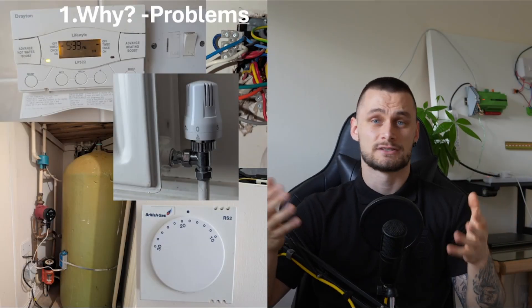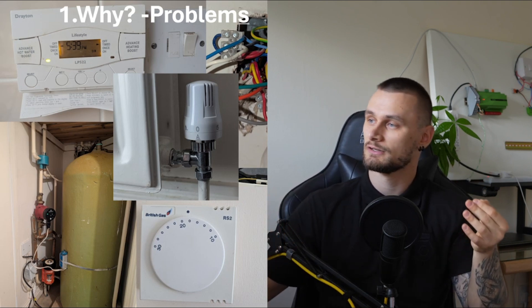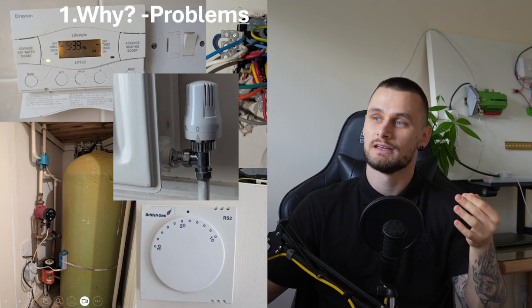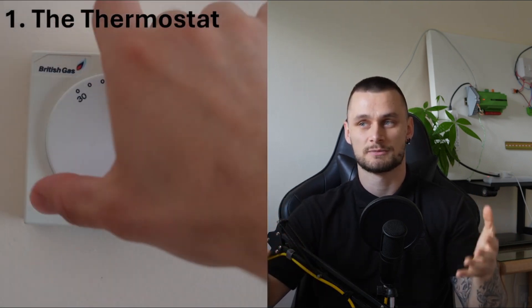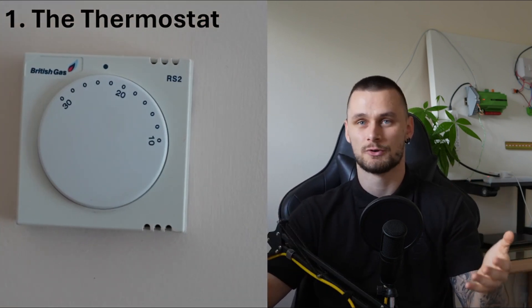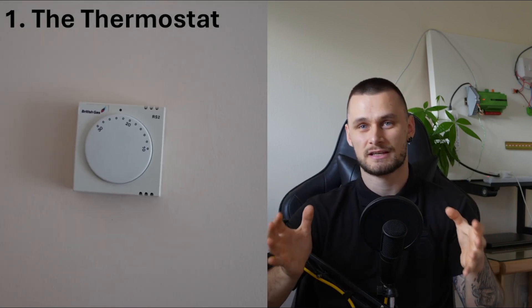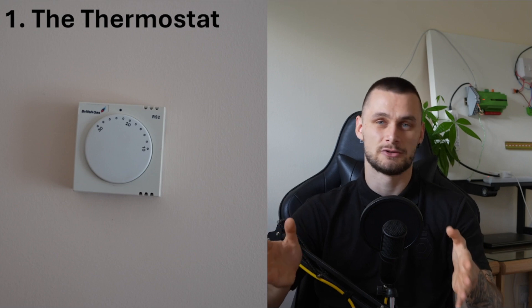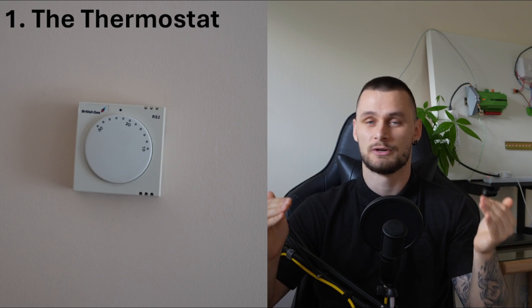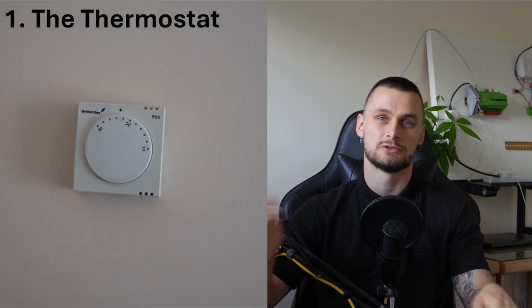The first thing to address is why — what is the actual problem with the system and why do we want to automate it? The first issue is the thermostat itself. There's usually a thermostat in one or two places, most likely the living room or hallway. That's not ideal because you could be sitting in your bedroom overheating while the living room is still calling for heat. Your only option is to manually adjust the TRV or go and switch off the heating.